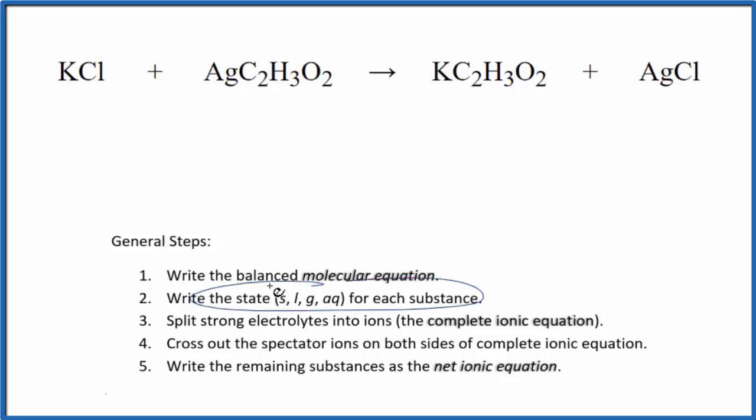Next, we need to write the states for each substance. So potassium compounds, chlorine, the chloride ion, they're going to be soluble. They'll dissolve, break apart into their ions.